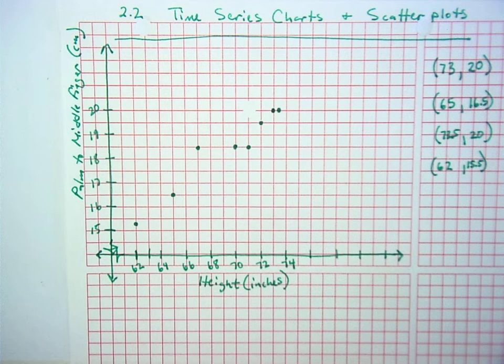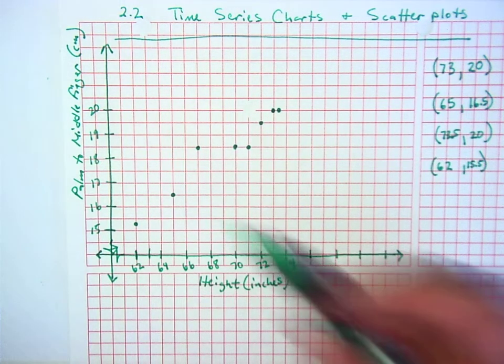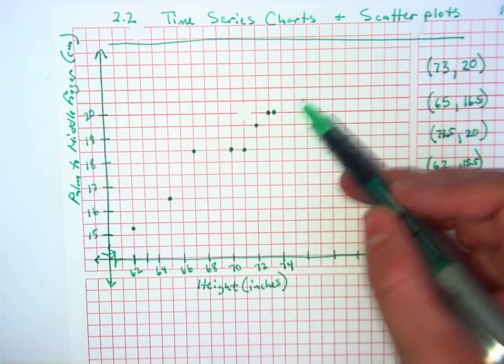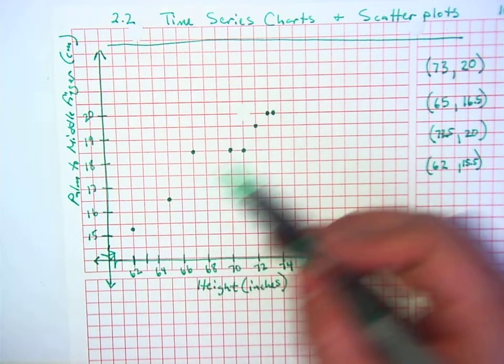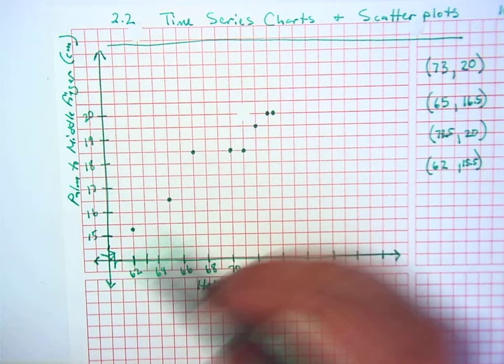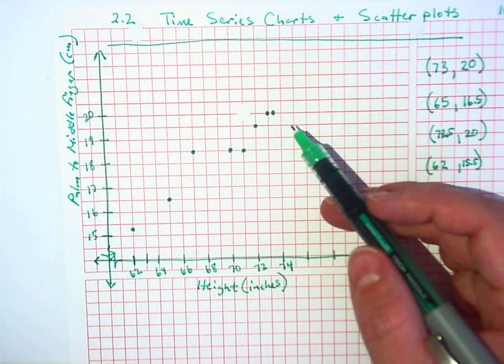Well, what do you guys think? Is height related to how long it is between your palm and your middle finger? Yeah, and what do you call this? What do you call it when things go uphill like this? It's called a certain correlation. Do you remember what that's called? A positive correlation.